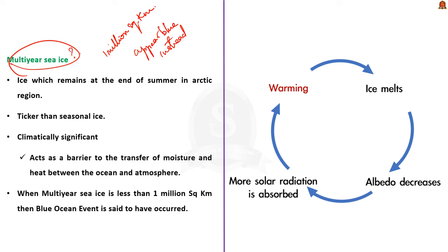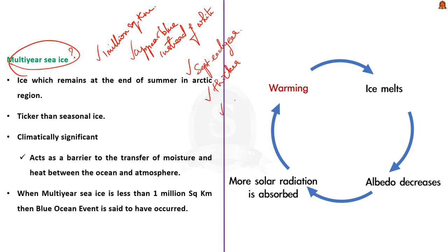You might have a doubt: what is multi-year sea ice? The volume of sea ice in the Arctic region varies with season, and it becomes very minimal around September each year. The ice which remains at the end of summer is called multi-year sea ice. This multi-year sea ice is thicker than other seasonal ice and plays an important role in combating climate change. Due to its thickness, it acts as a barrier to the transfer of both moisture and heat between the ocean and the atmosphere.